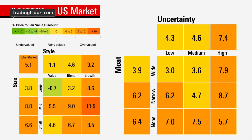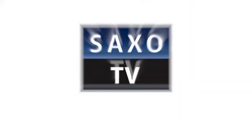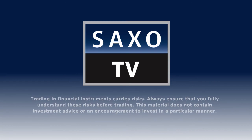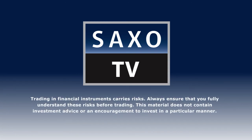From looking at the two style boxes, you can see that the U.S. market is generally overvalued. But if you're looking for some opportunity, large cap value and wide moat companies with low uncertainty are the places to look, and they're much more sustainable.